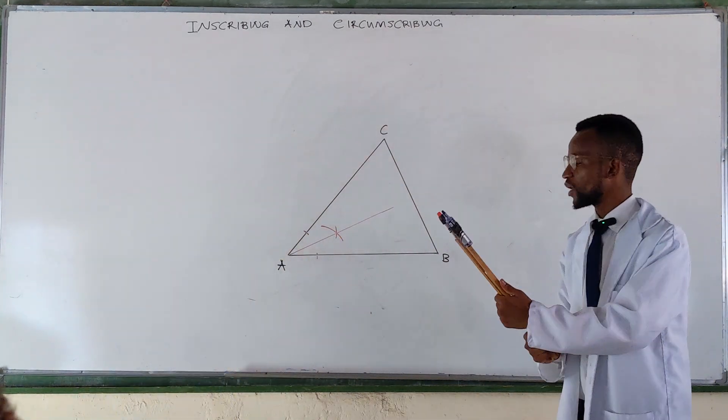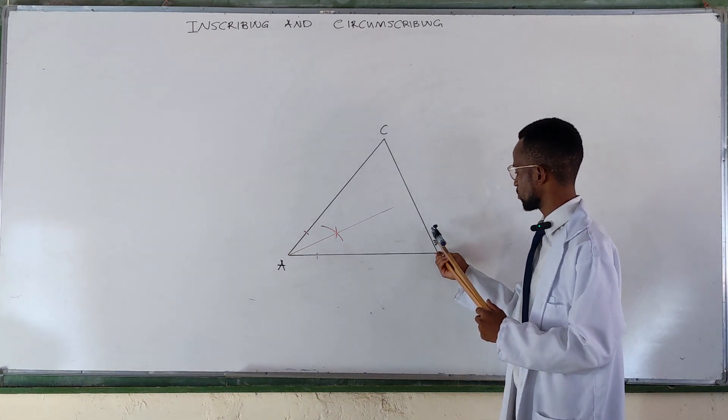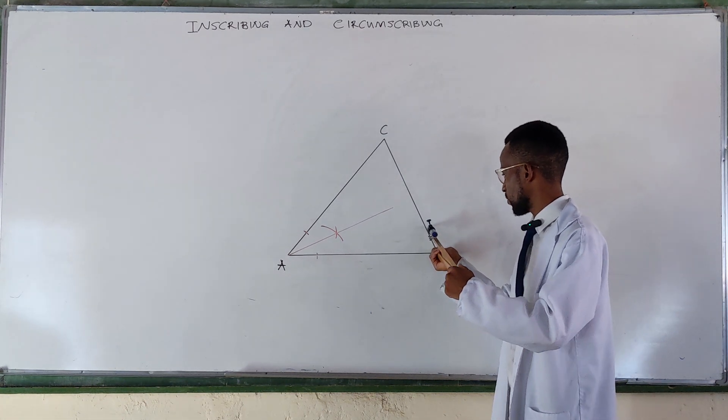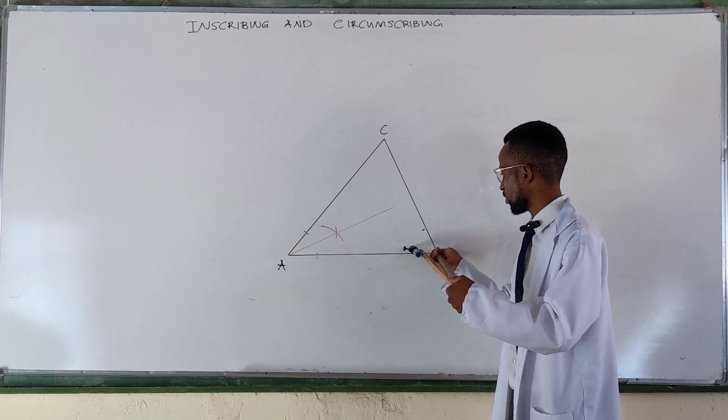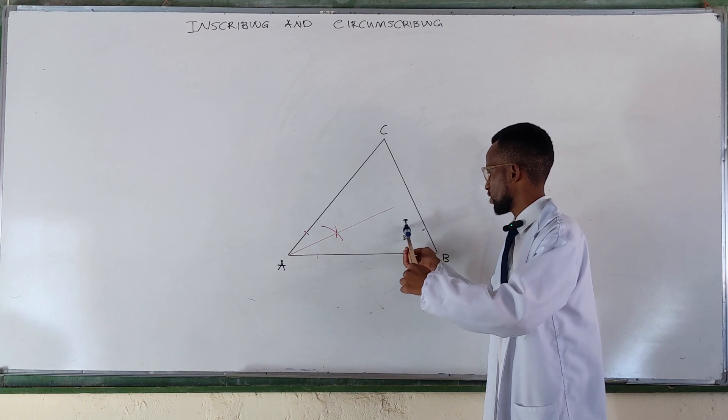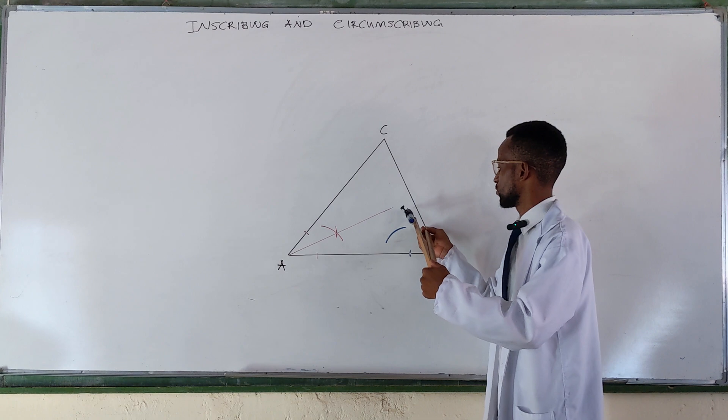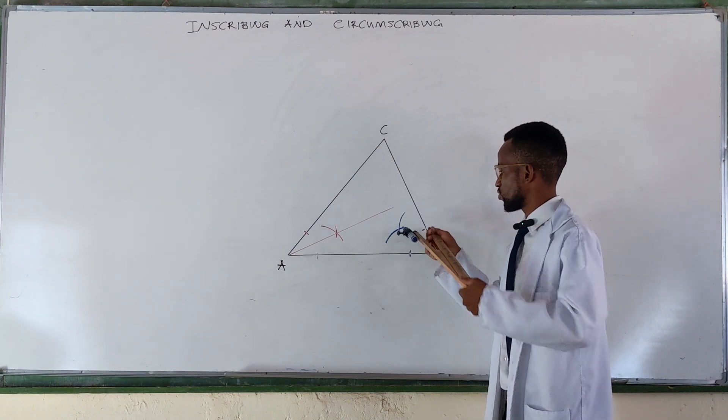Get your compass, open it to any convenient radius of your choice, place it at that point, strike an arc. Place it at that point, strike an arc, strike another one.